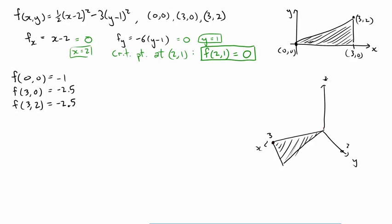Okay, so so far we have a list of four numbers: 0, minus 1, minus 2.5, and minus 2.5. The largest of those is 0 and the smallest is minus 2.5, but we won't know whether that's the absolute max and the absolute min until we rule out the possibility that the surface actually reaches its max or min somewhere along an edge.